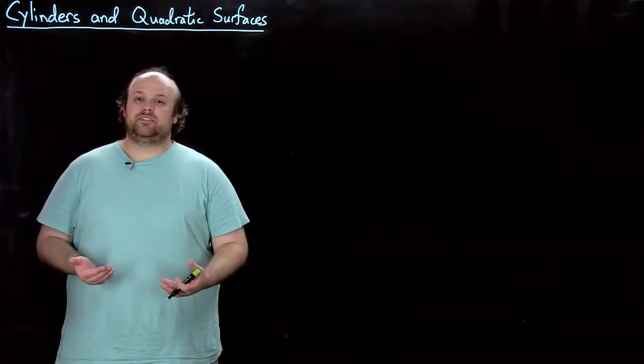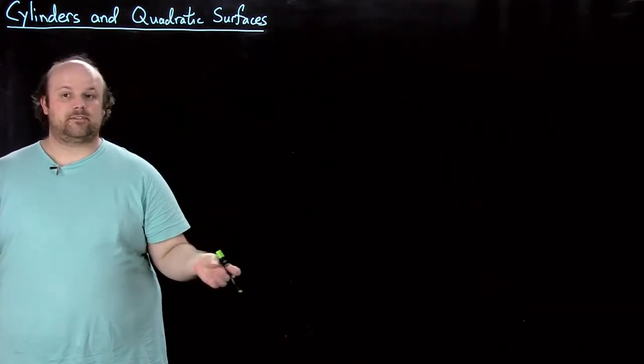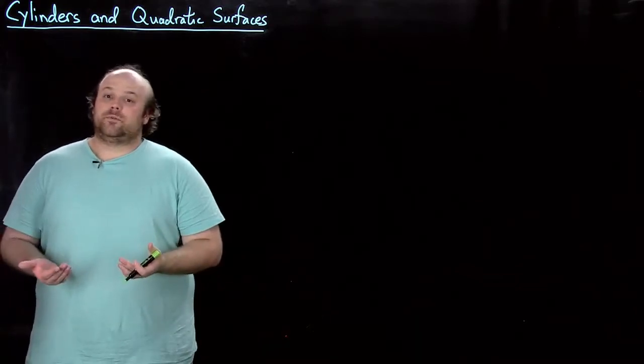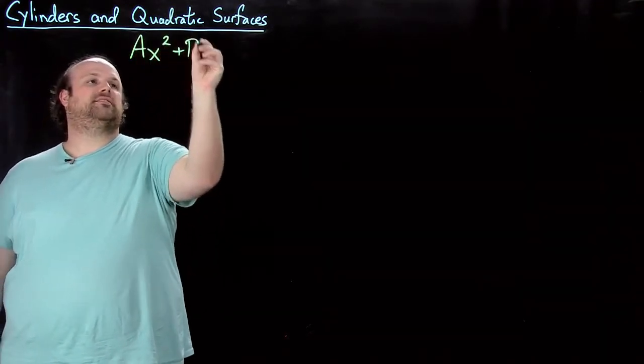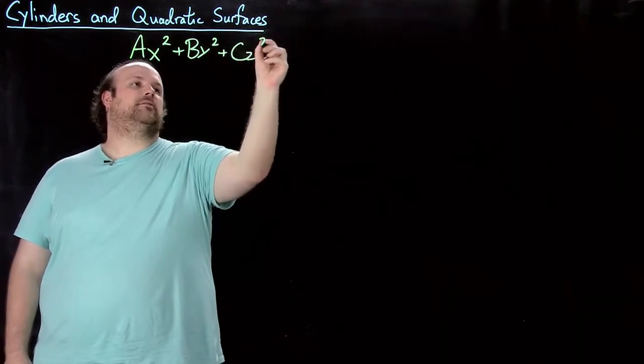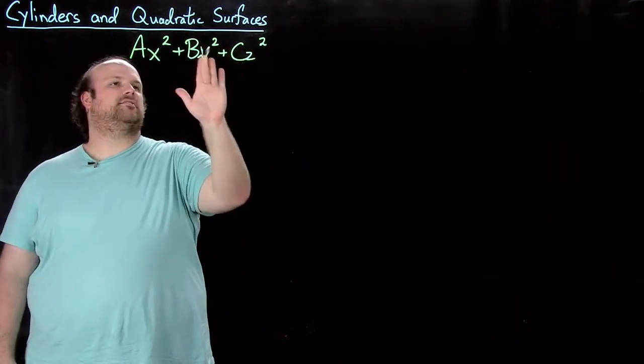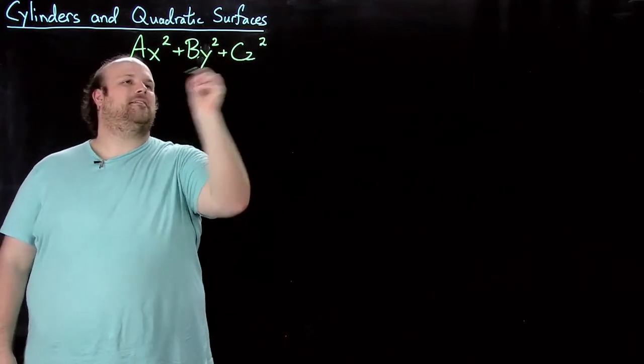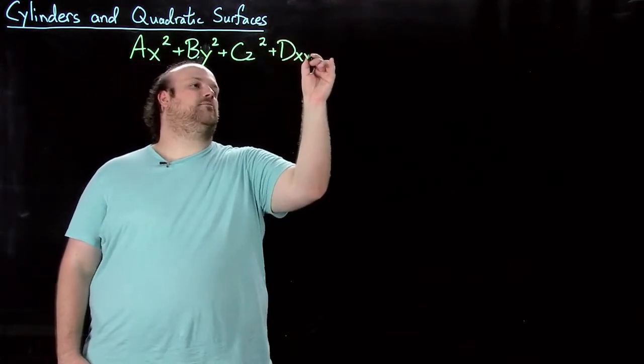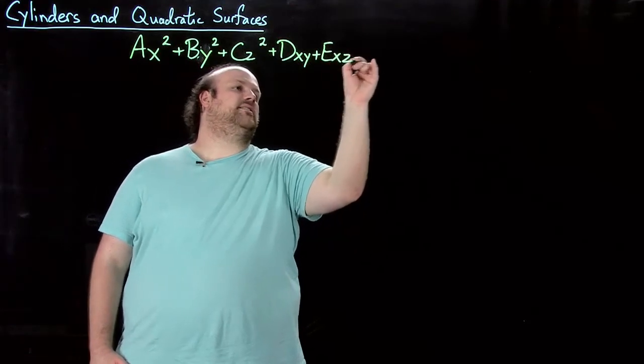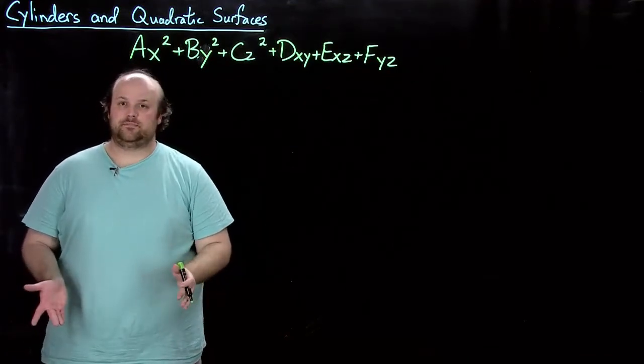So what is a quadratic equation in three variables? Well, we have to have all the degree 2 terms, all the degree 1 terms, and the degree 0, the constant term. So what does such a thing look like? Well, let's start with ax squared plus by squared plus cz squared. So we have those type of degree 2 terms. But then we have some more degree 2 terms as well. We have dxy, we have exz, and fyz. So now those are all the degree 2 terms.